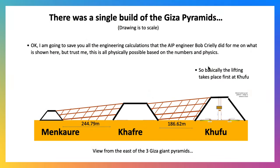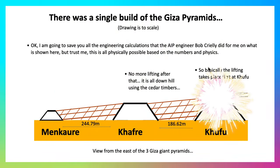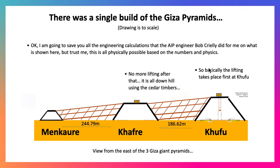Basically the lifting takes place first as we just showed in Khufu, and then from there it's all downhill. We use cedar timbers so it's much easier to move blocks down. We go from Khufu all the way down to Khafre and from Khafre to Menkaure.